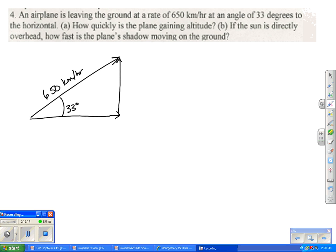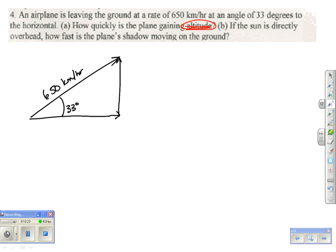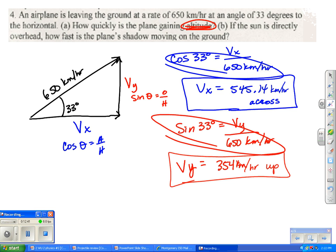This next one, we know that it's leaving at 650 kilometers per hour at a 33 degree angle to the horizontal. We want to know how quickly it's gaining altitude. Altitude is actually the y direction. So we want vy. And then we want to know how fast the shadow is moving across the ground. So that's actually vx. You'll do it just like the previous problem when we use sine and cosine to find the corresponding side. So when you plug in your information that you know for sine and cosine, you'll be able to find out by using cosine that vx is 545.14 kilometers per hour across. And that the vy is 354 kilometers per hour up.